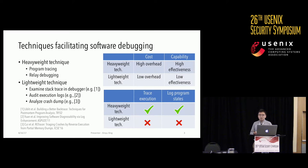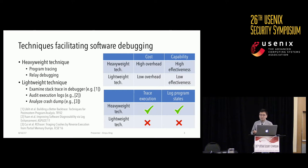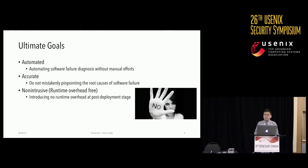As summarized in this table, techniques proposed have different costs and capabilities. For heavyweight techniques like record and replay, it needs to trace program execution and log program status, which introduces high overhead but provides very useful information for finding vulnerabilities. Lightweight solutions have nearly no overhead, but the lack of program tracing usually results in very limited power in finding software bugs.